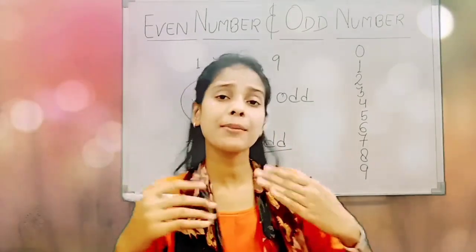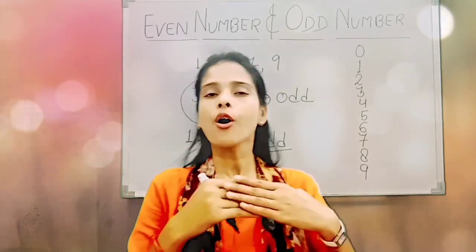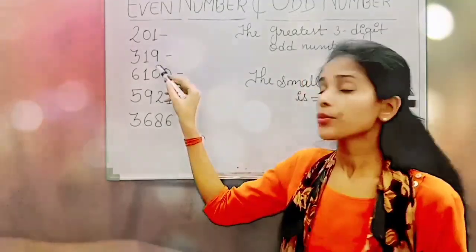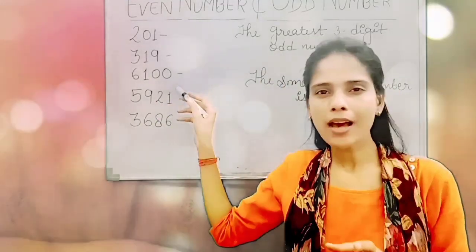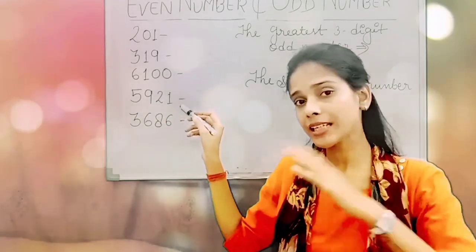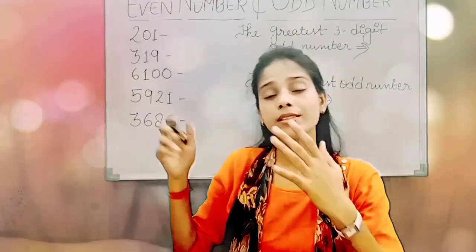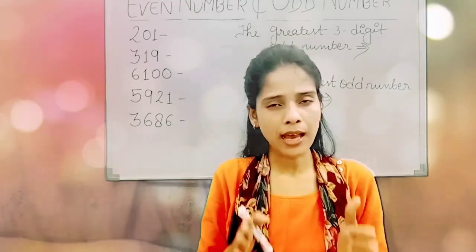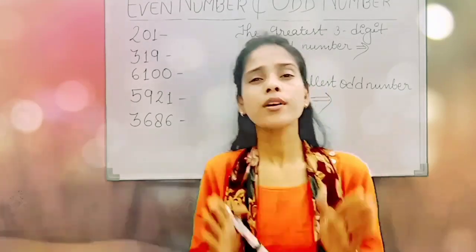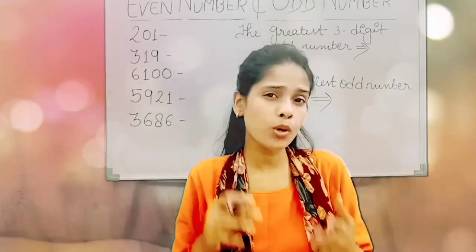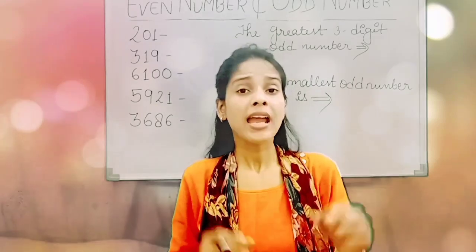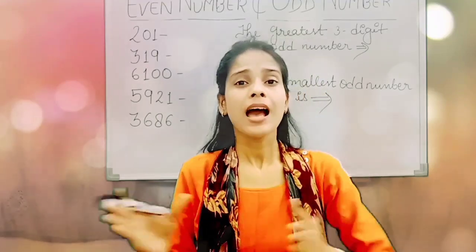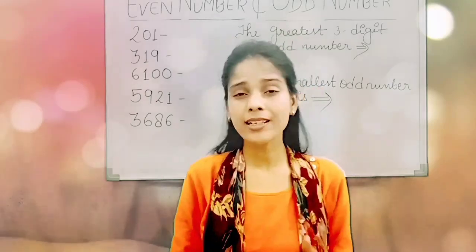Abhi mein aapko kuch questions de raha hoon aur unhe discuss karte hain. You have to tell: two hundred one is even or odd; three hundred nineteen is even or odd; six thousand one hundred is even or odd; five thousand nine hundred twenty-one is even or odd; and three thousand six hundred and eighty-six is even or odd. Even number means if a number has 0, 2, 4, 6, or 8 at the ones place. Odd number means if a number has 1, 3, 5, 7, or 9 at the ones place.